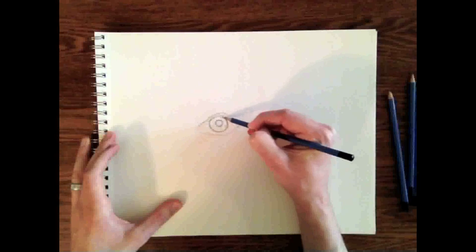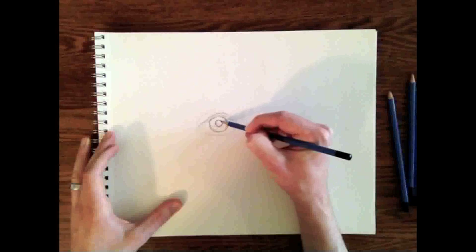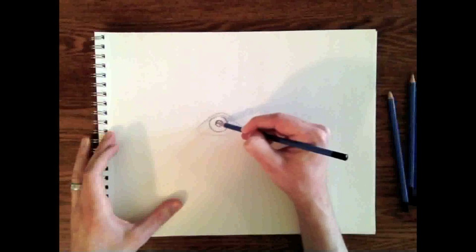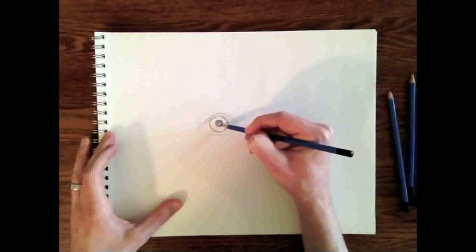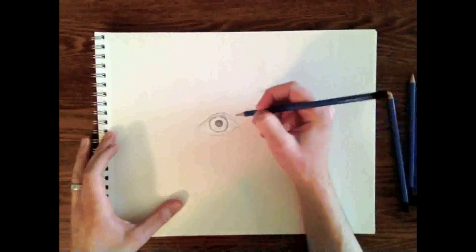You want to outline the iris and the pupil pretty dark. The way that I'm going to draw this is that I'm going to fill it all in and then erase away the highlights.